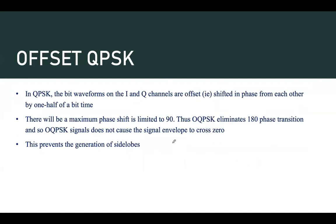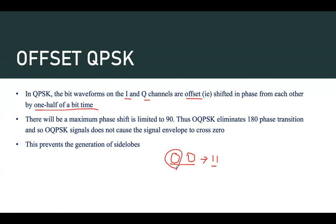In case of offset QPSK, what we do is we do not allow both bits to change at the same time. We never allow a change from 00 to 11 or from 11 to 00 at the same instant. The I and Q channels — that is the odd and even streams — are offset by one half of a bit time, so only one bit can change from 0 to 1 or 1 to 0 at any given instant. After a half bit time, only the next bit can change. By doing this, we avoid the generation of side lobes.